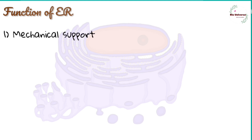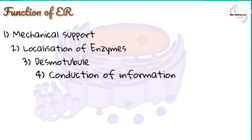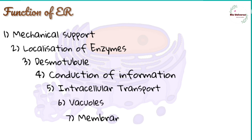Functions of the endoplasmic reticulum: one, it provides mechanical support to the cytoplasmic matrix; two, it possesses sites for a number of enzymes and cytochromes; three, via desmotubules, ER of one cell communicates with ER of adjacent cells; four, it conducts information from outside to inside the cell; five, it functions as a circulatory system for quick transport of materials; six, it forms vacuoles; seven, it provides membranes to the Golgi apparatus for production of vesicles and Golgi vacuoles.